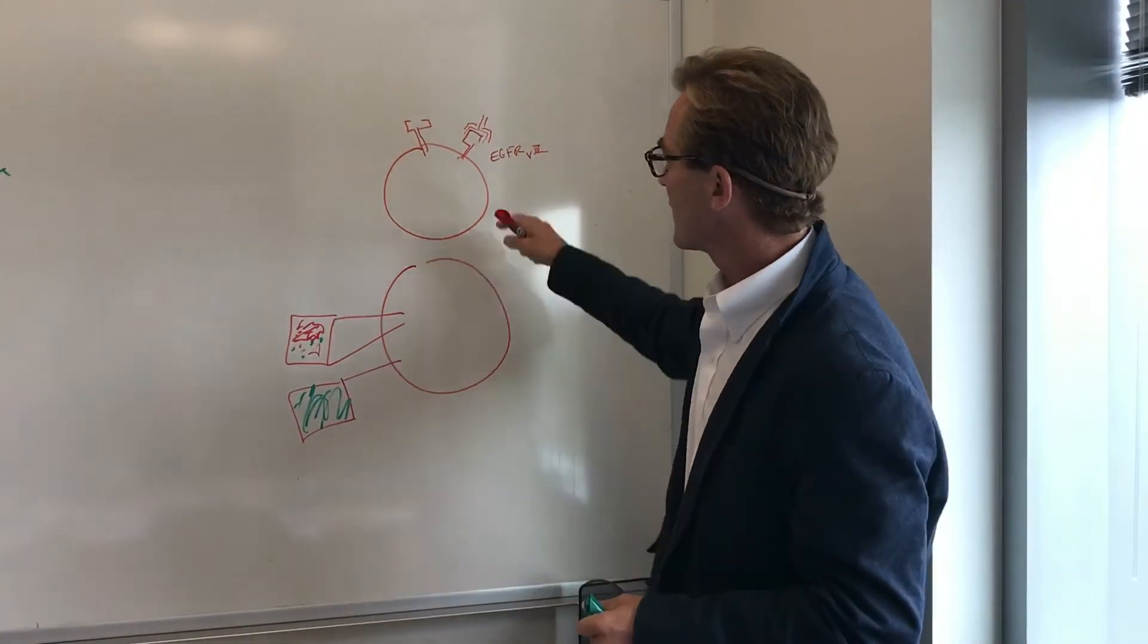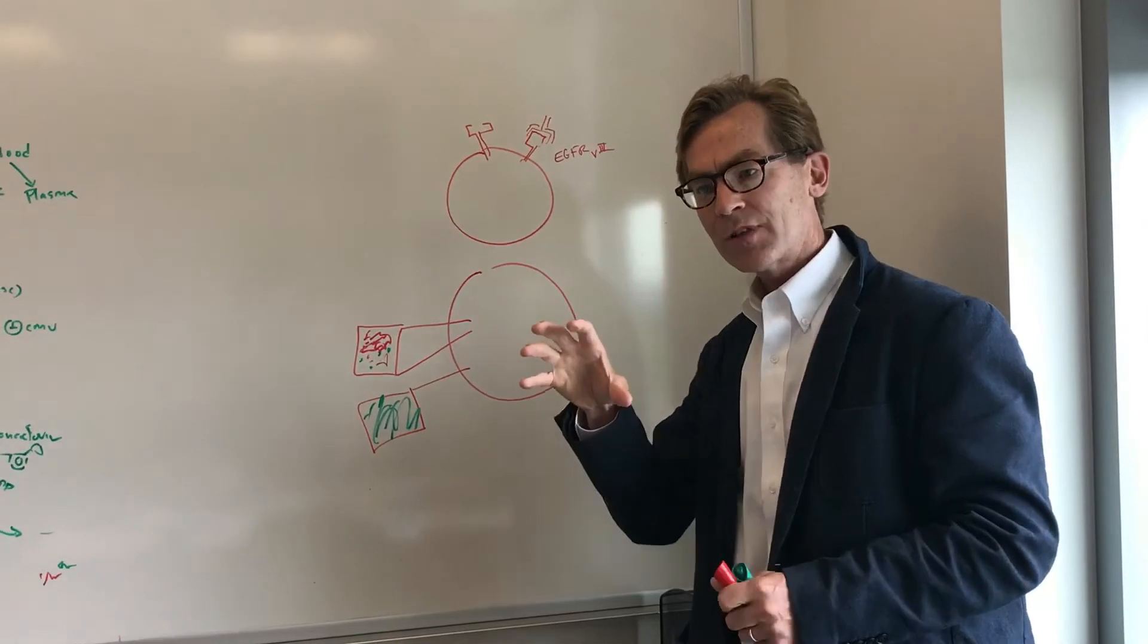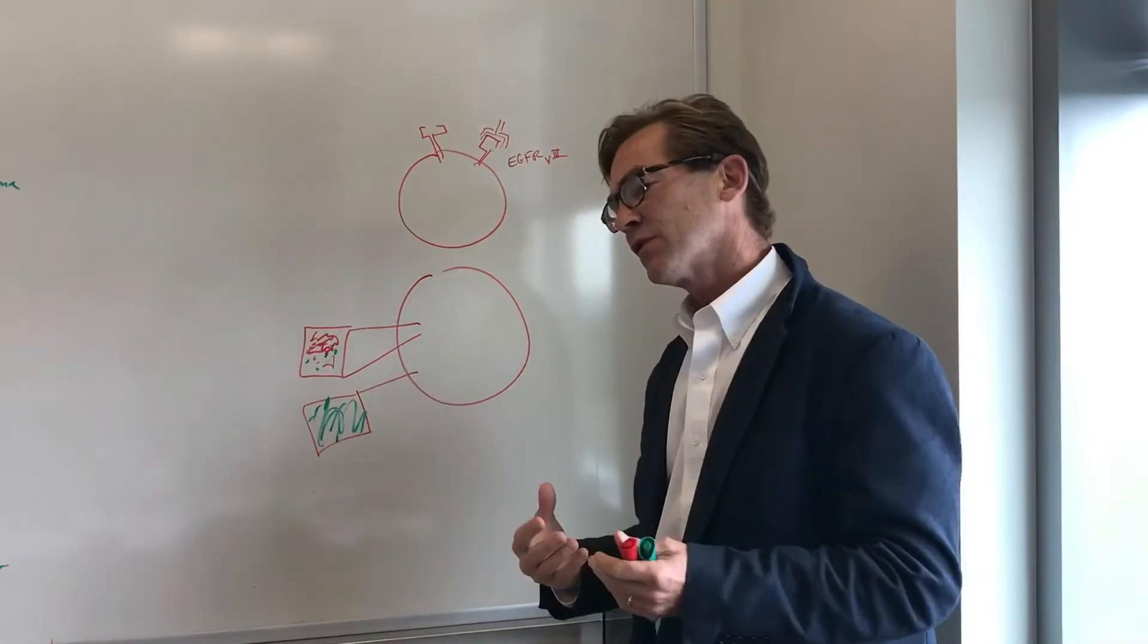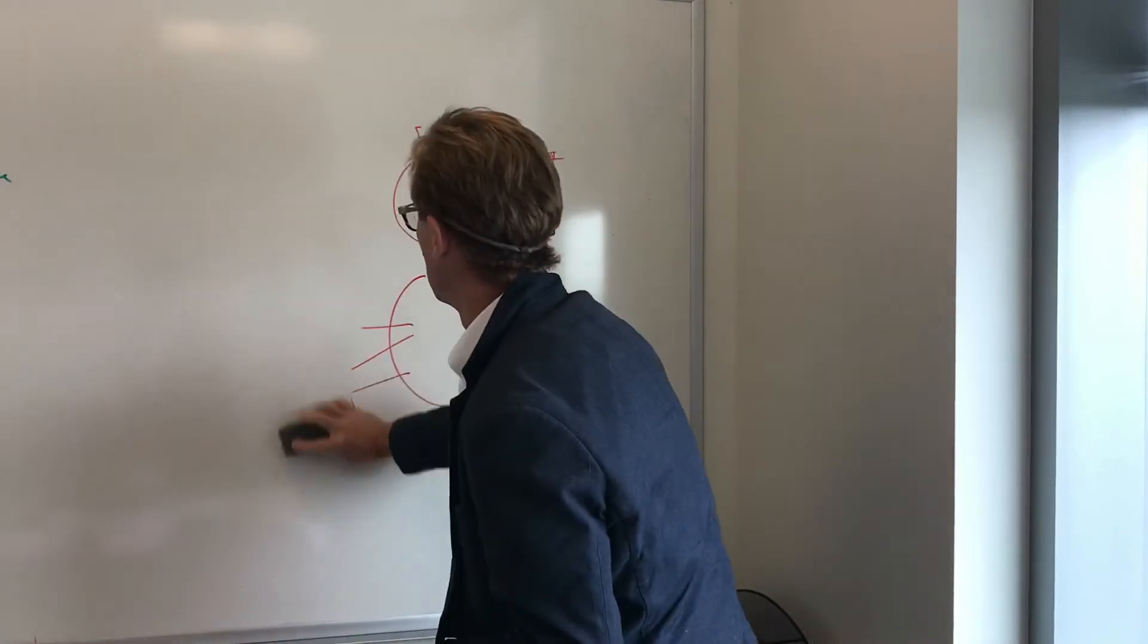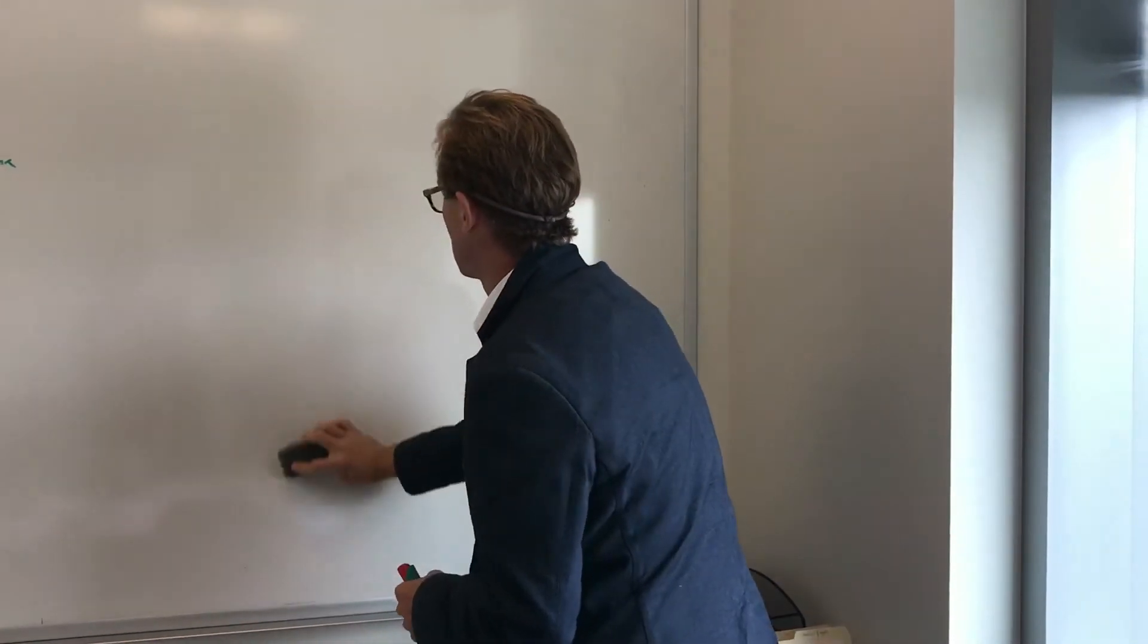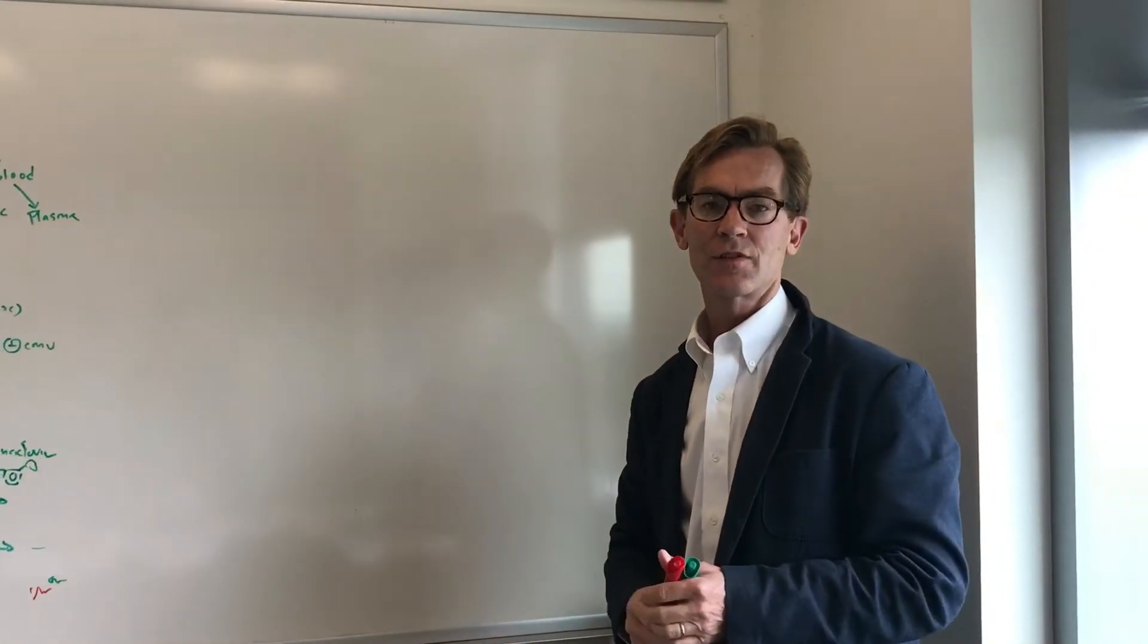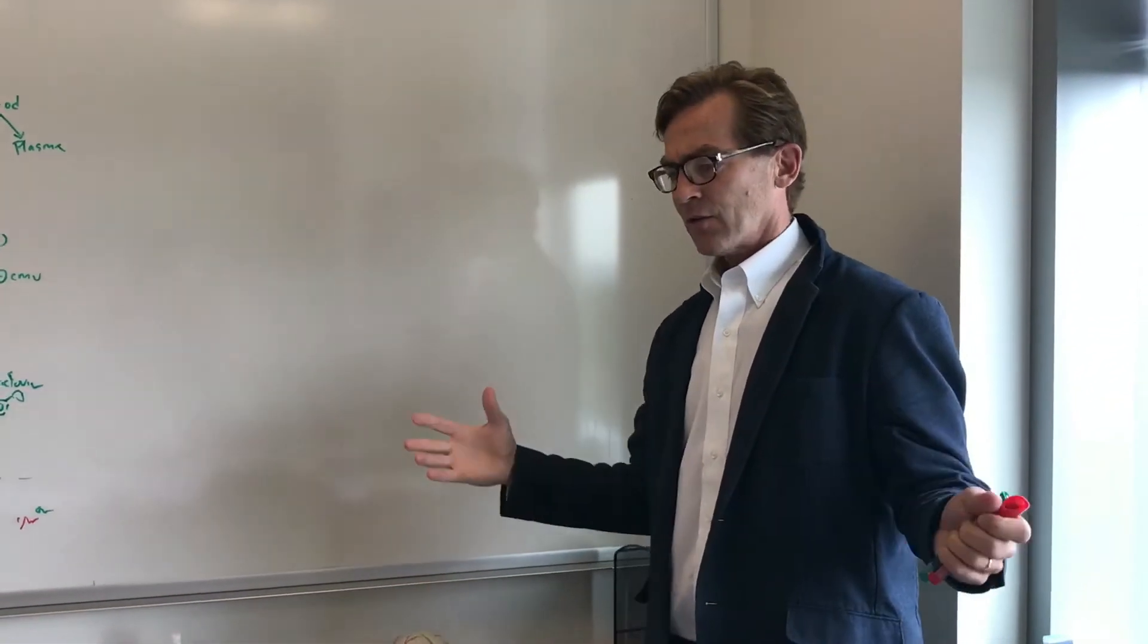The immune system, as I mentioned, sometimes you can use antibodies or immune proteins that attack a specific shape. But a lot of the most effective treatments in the immune system are based on T cells. And that requires just a little bit of background. So basically, in broad terms, the immune system is divided into humoral, which is antibodies, and then cell mediated, which is T cells.